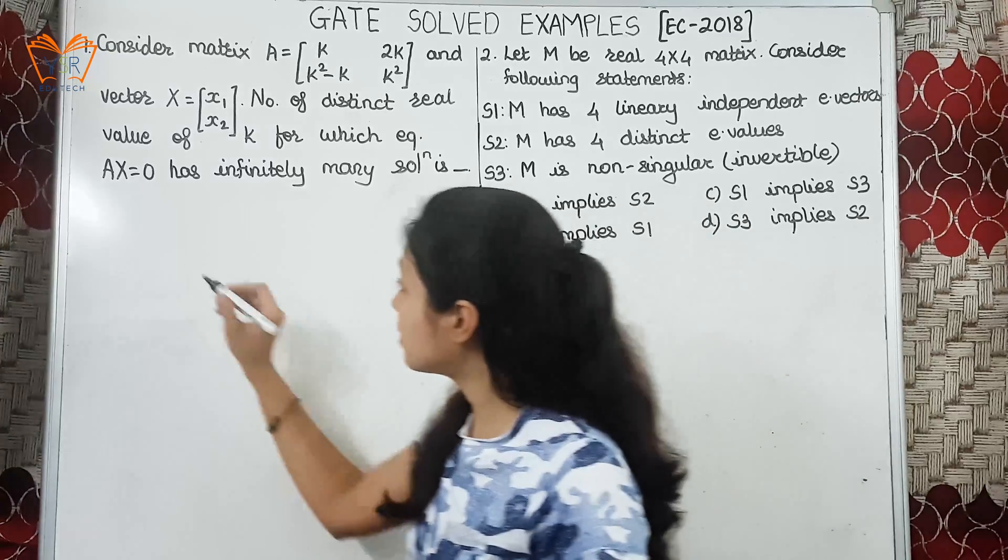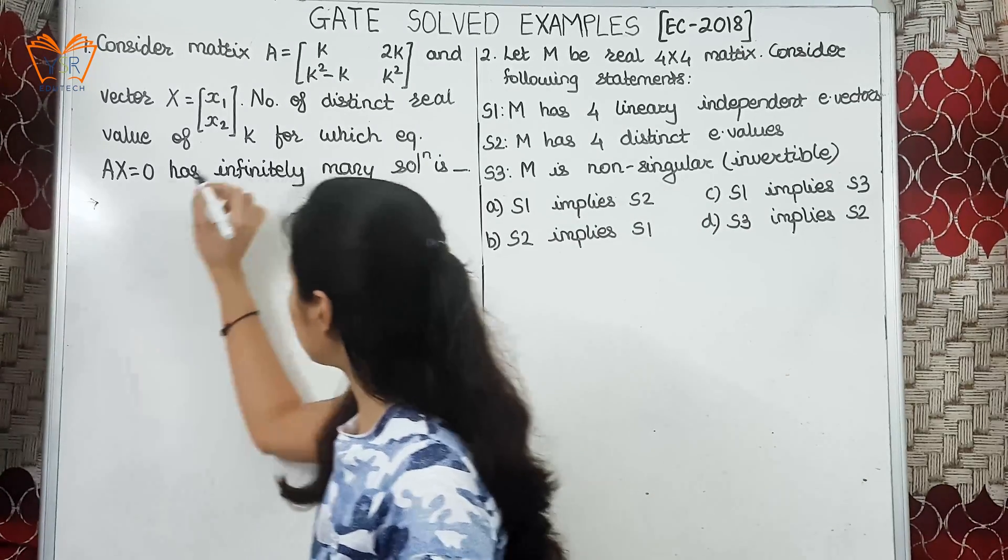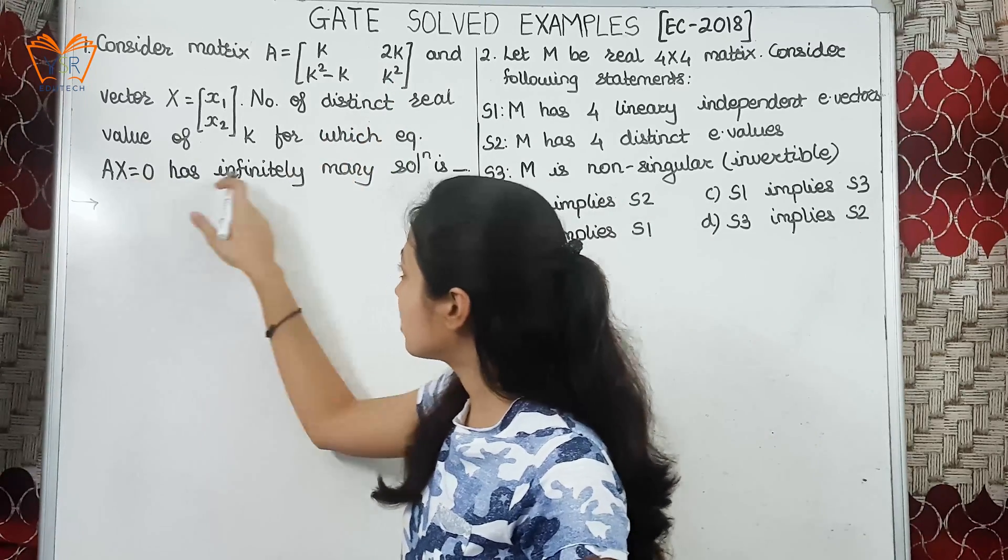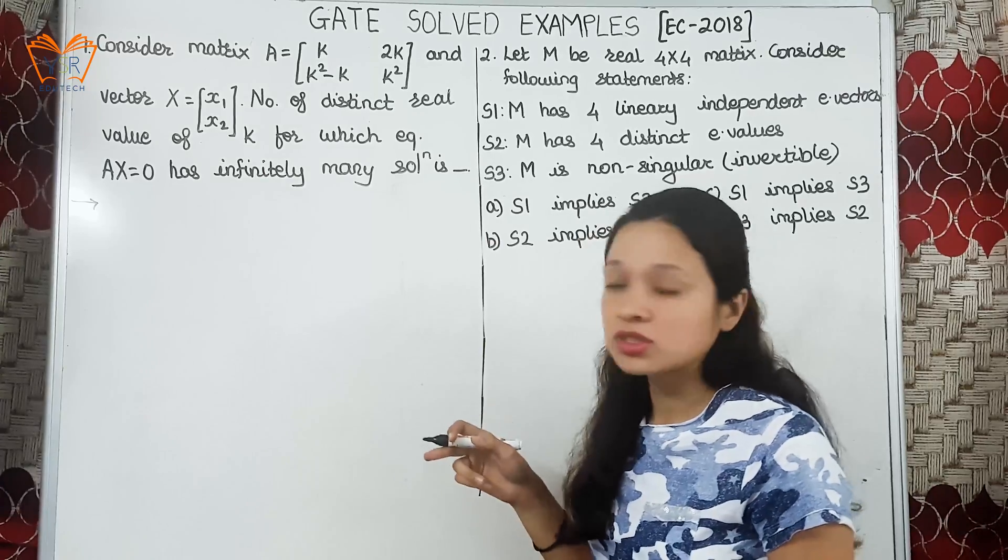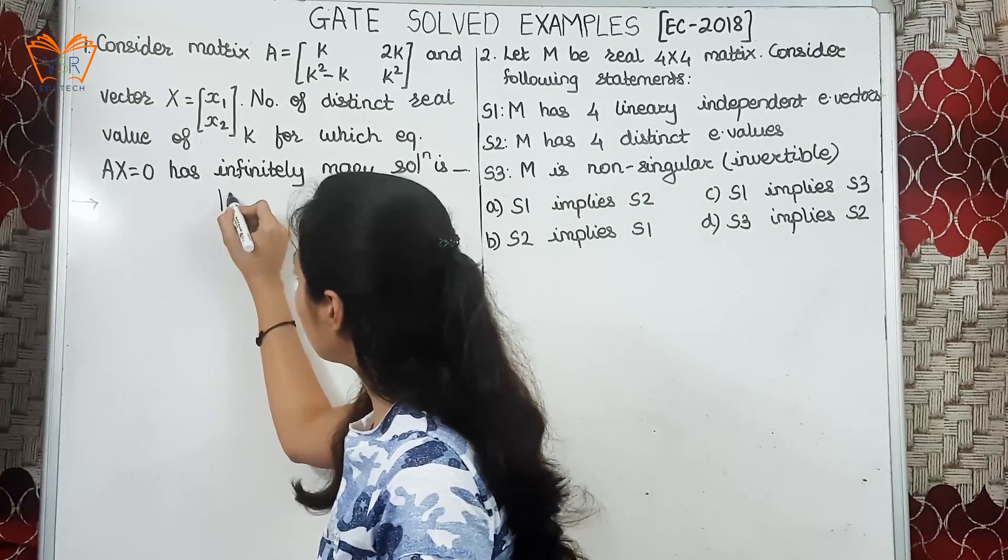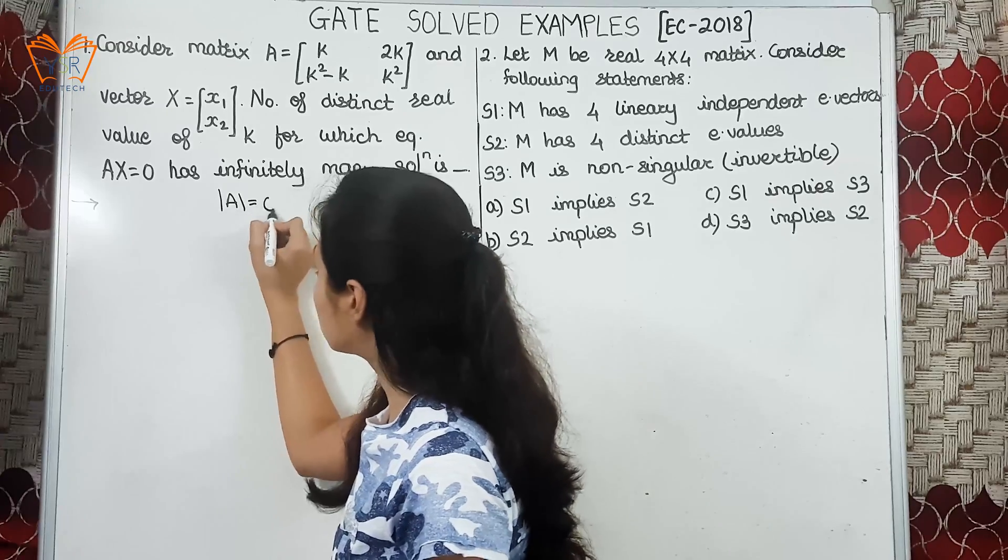Now, what they have given is they have given a matrix A that is 2 by 2 matrix and they have given equation Ax equal to 0 that has infinitely many solutions. We know infinitely many solutions are possible when value of determinant is equal to 0.